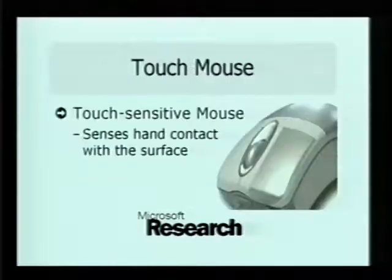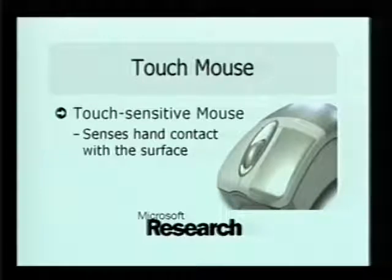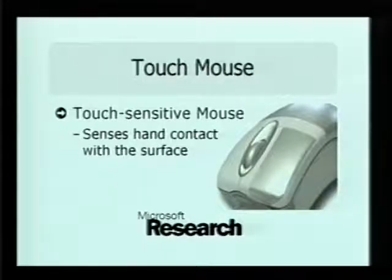As an example of this class of device, we've implemented the Touch Mouse. This device uses capacitance sensors to detect hand contact with the body of the mouse, the mouse button, and the scrolling wheel.